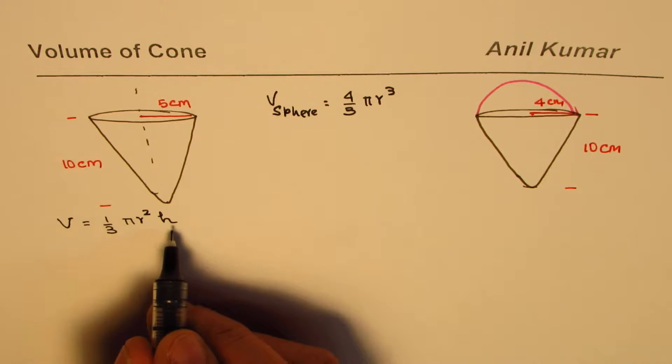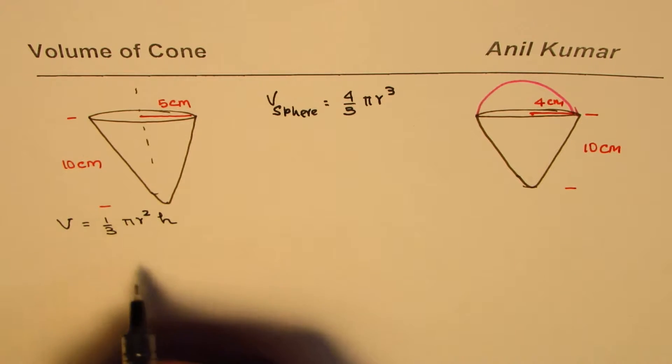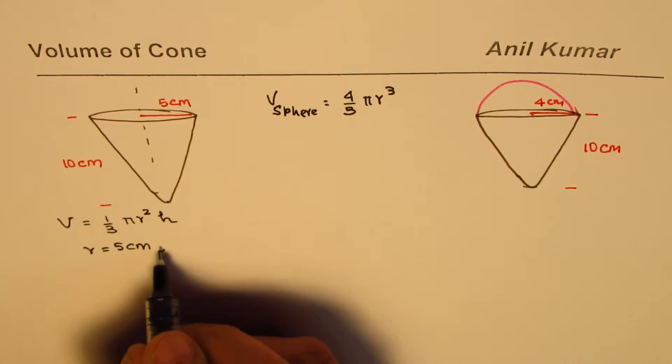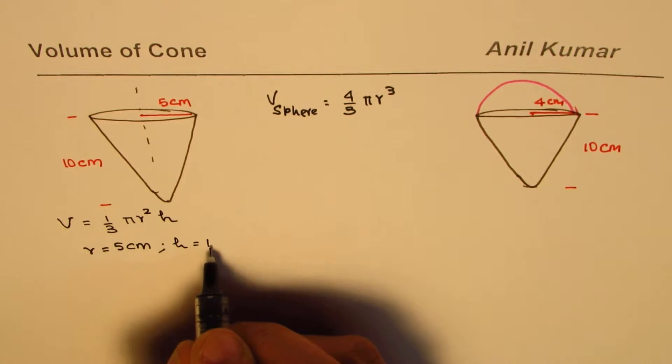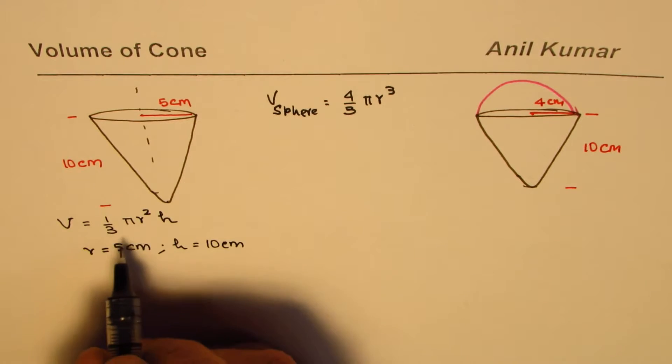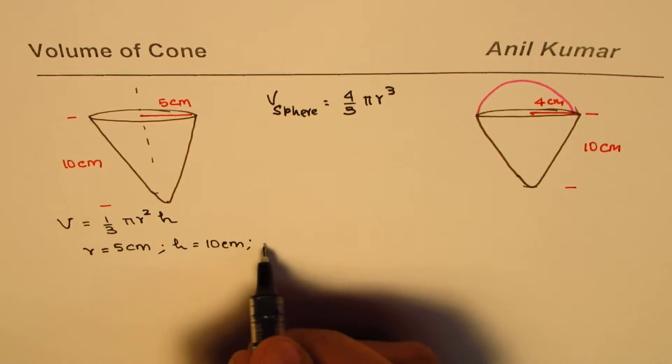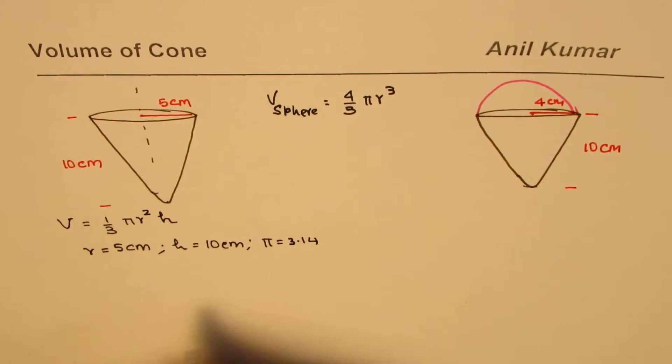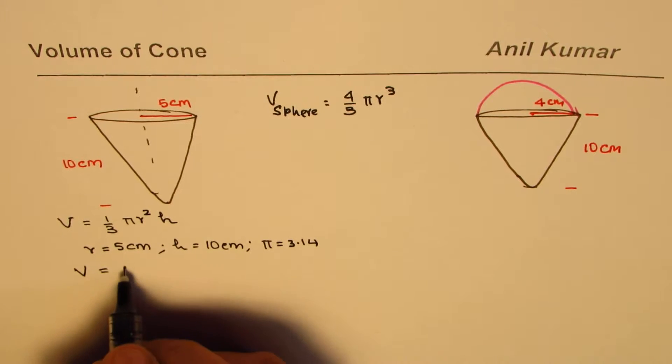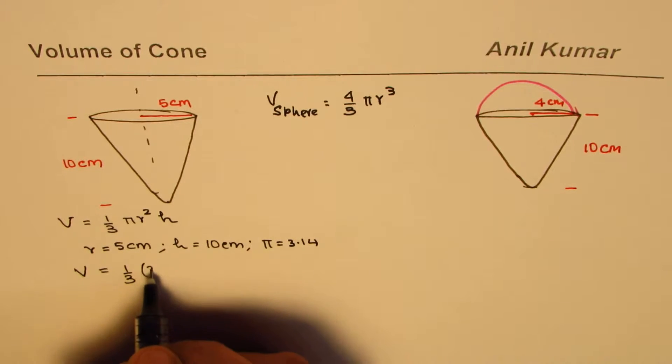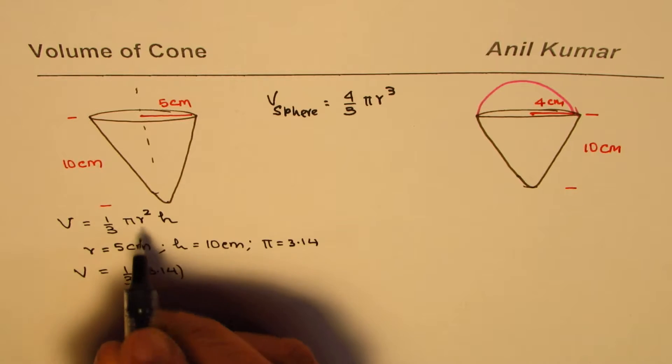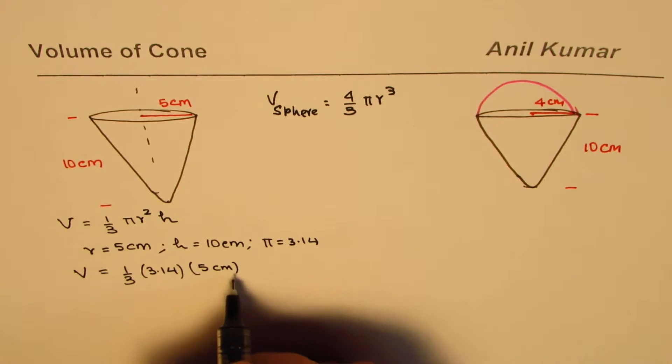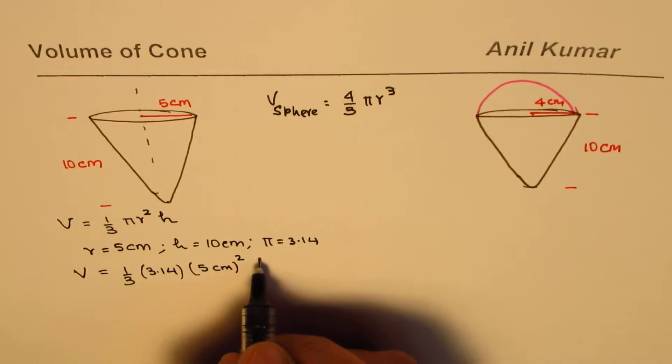In this particular case r equals 5 centimeters, height is given to us as 10 centimeters, and pi we'll take value as 3.14. Volume will be one third of 3.14, r is 5 so it'll be 5 centimeters square, and height is 10 centimeters.